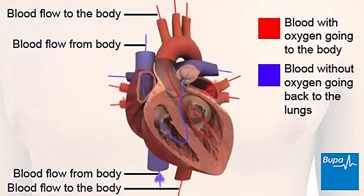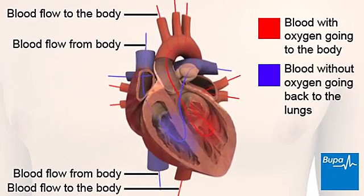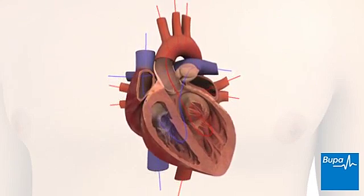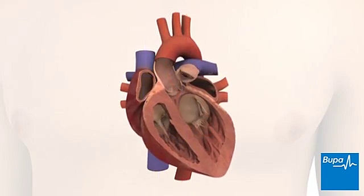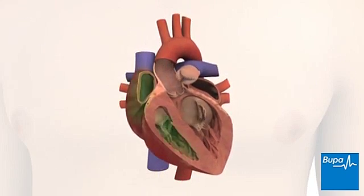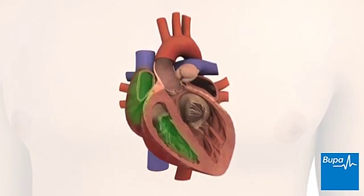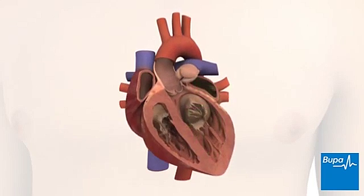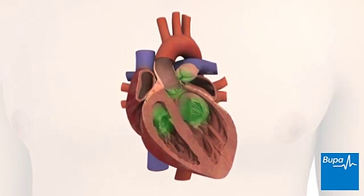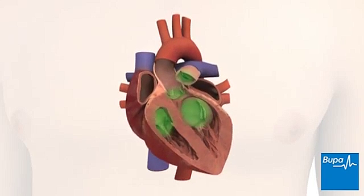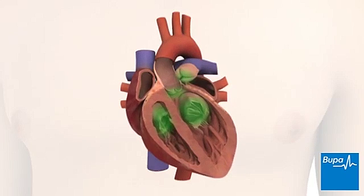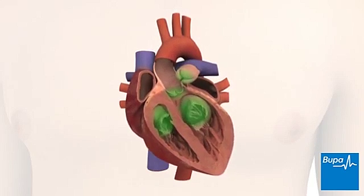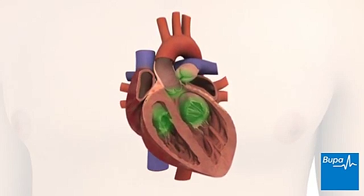To do this effectively your heart is divided into four compartments or chambers. There are two chambers on the right side of the heart and two on the left. A valve lies at the exit of each chamber, ensuring that blood flows in one direction only.